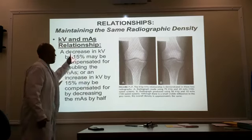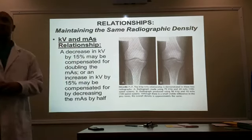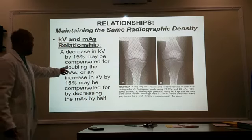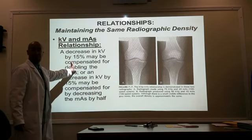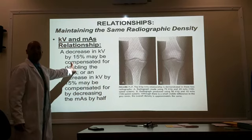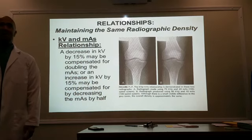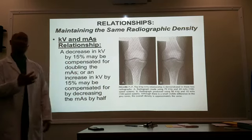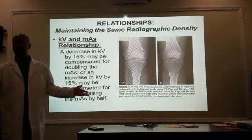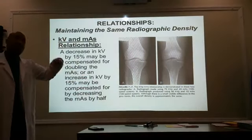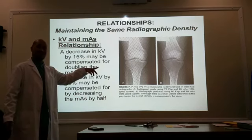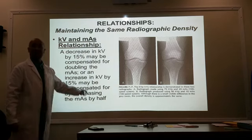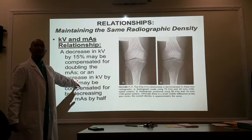Contrast. When I decrease my kV by 15%, my radiographic image is going to be more black and white — that's high contrast. But in doing so, I've also affected my density. Although I have a black and white image, my overall brightness is going to be too light. So I want to get it back to the original density. And how do I compensate? By doubling my mAs. This is how you use them together.